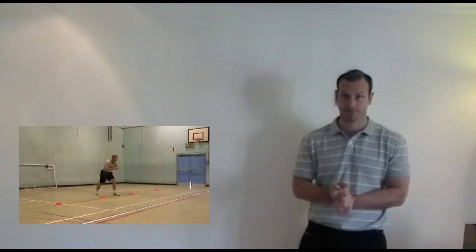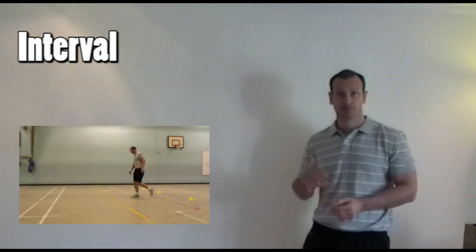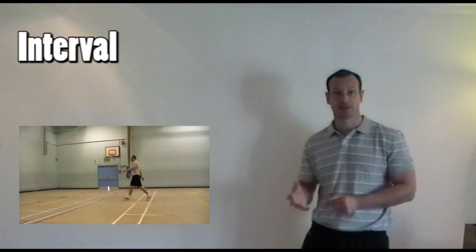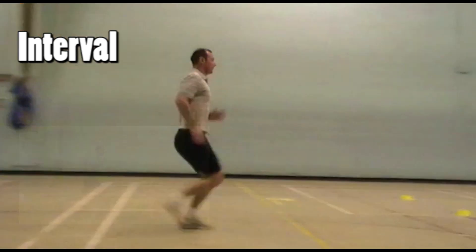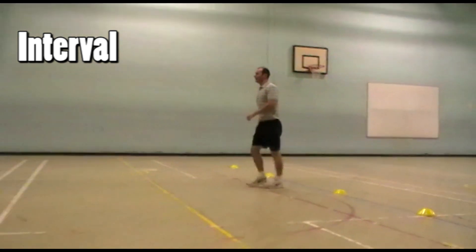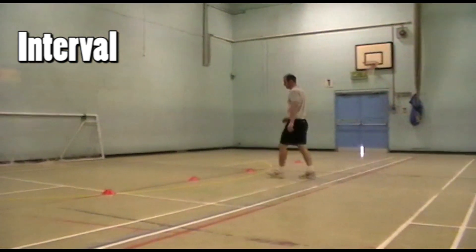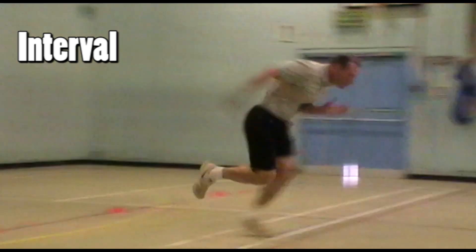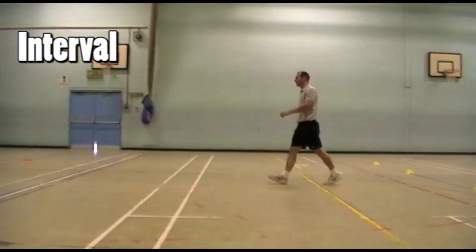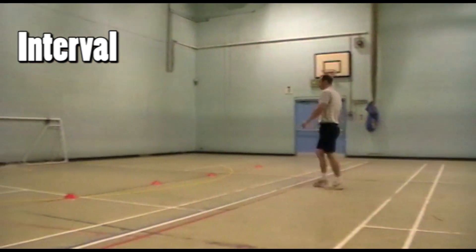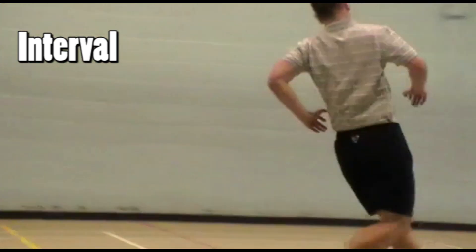Interval training involves repeated work and rest periods — for example, sprinting for 30 metres and then resting for 30 seconds, repeated many times. The main advantage is that the rest periods allow muscles to recover between intense periods of hard work. A sprinter may adapt interval training with short, sharp sprint blasts, whereas a long distance runner would want longer intervals of slower-paced work.